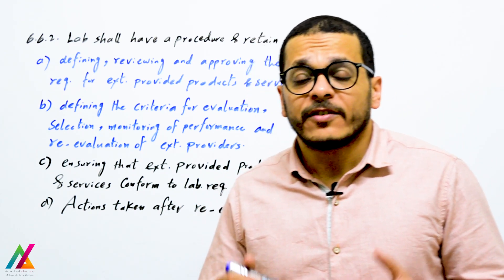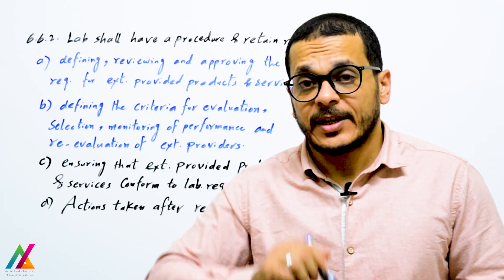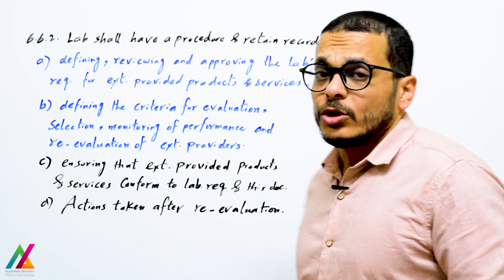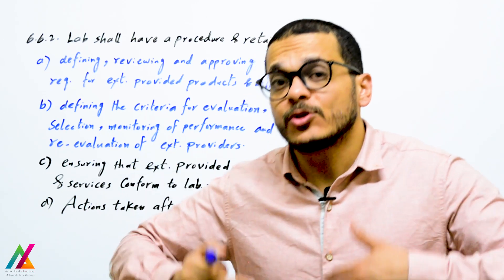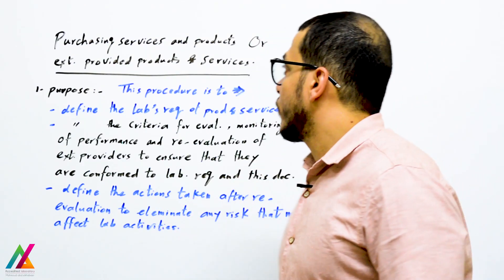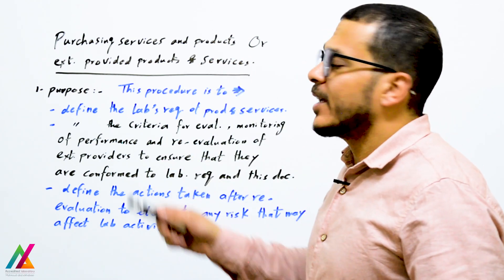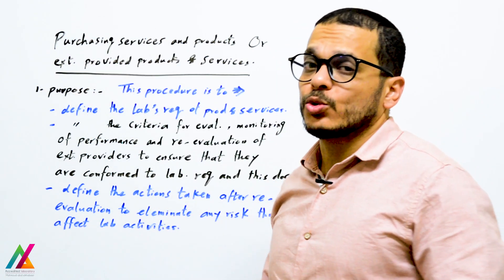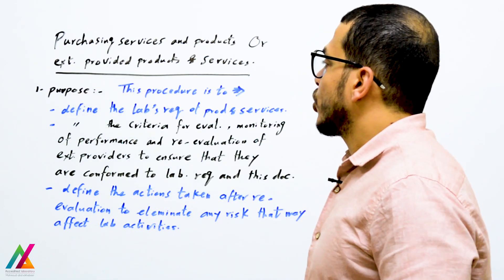The last point covers actions taken after re-evaluation. If a service or product from any external provider is found to be not good, they shall be removed from the list of approved external providers for future use. This constitutes the procedure for purchasing services and products — best named the procedure for externally provided products and services, though purchasing should also be mentioned.